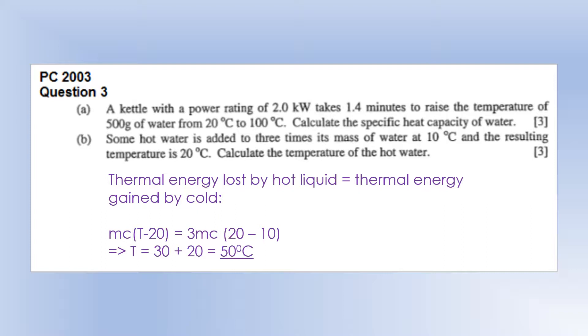On the left hand side we've got the energy lost by the hot liquid, and I've called its mass m. We've got the energy gained by the cold which has mass 3m. They're both water, so they both have the same specific heat capacity, so we can cancel out Cs, cancel out the Ms, rearrange to calculate T, and it turns out it's 50 degrees centigrade.